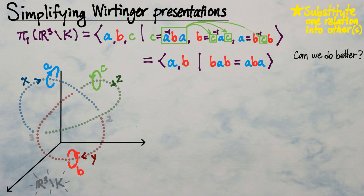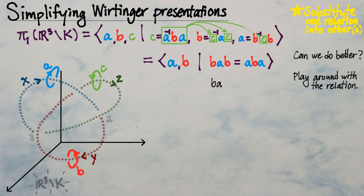It would be nice to find a presentation that tells us something about the powers of the generators rather than a relation mixing A and B on each side. Playing around with the relation BAB = ABA — multiplying by A on the left, then B, then A again — we're trying to express the left-hand side as the power of some element.